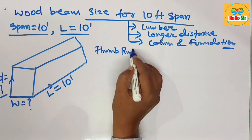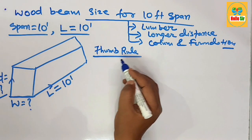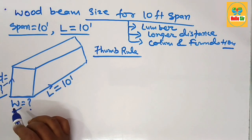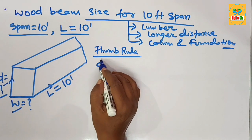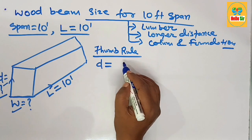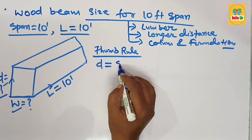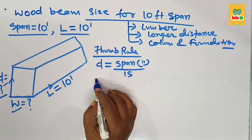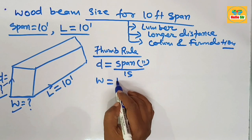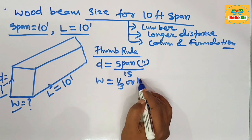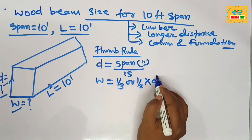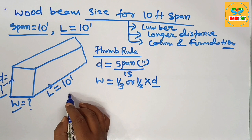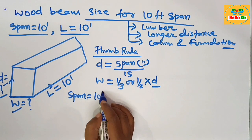The thumb rule for sizing a wood beam: to find the depth and width sections of the beam, the depth section equals the span in inches divided by 15, and the width section is one-third to one-half of the depth section. The given span length is 10 foot.